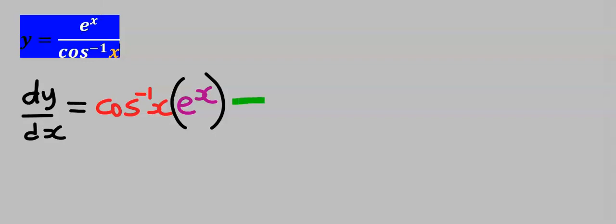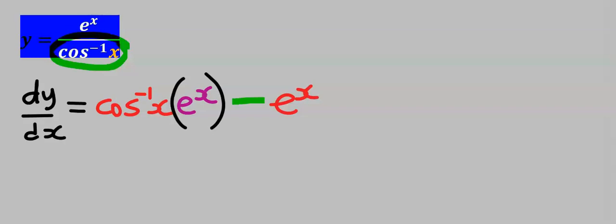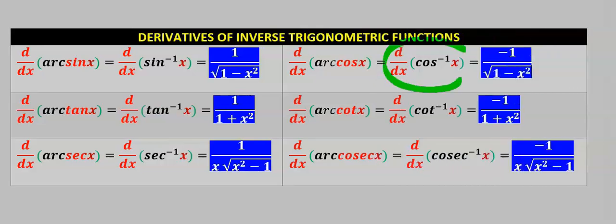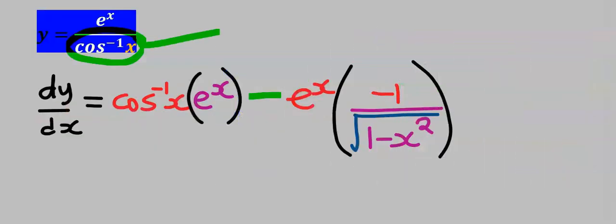Next we keep the numerator constant, which is exponential x. Then differentiate the denominator which is cos inverse of x. When you differentiate cos inverse of x you get minus 1 divided by the square root of 1 minus x squared. Hence the derivative of cos inverse of x is this.